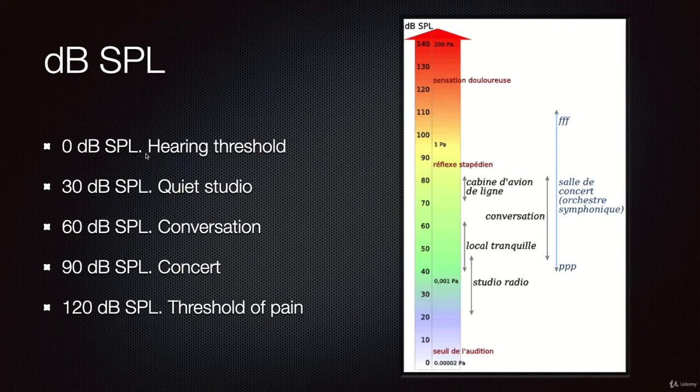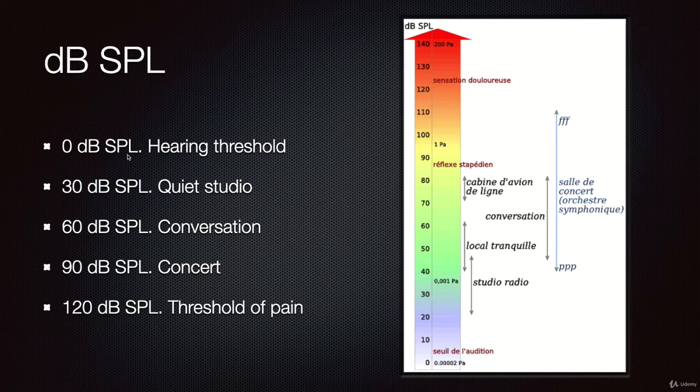The lowest level that we can hear would be 0 dB SPL. 0 dB SPL means something—I mean the world of dBs is kind of weird because 0 means something, means 20 micropascals, remember? So this is a very very very soft sound. Actually, it's around the hearing threshold.